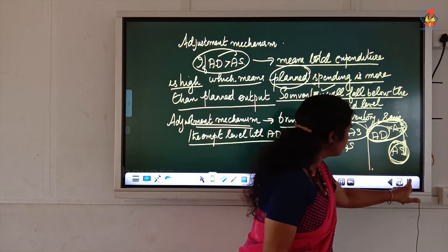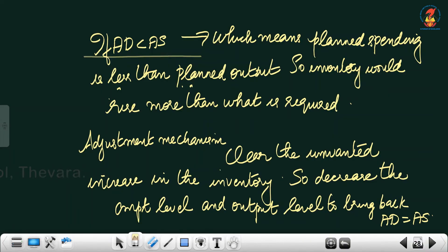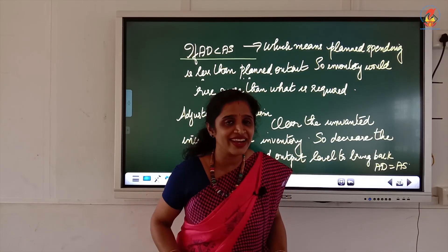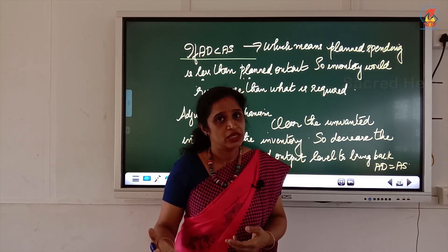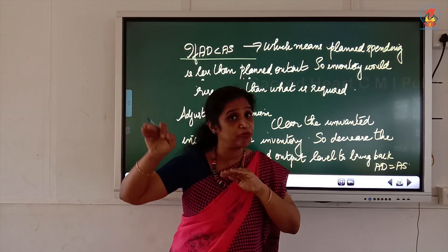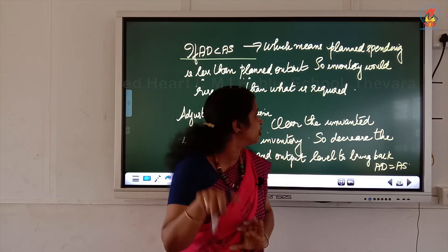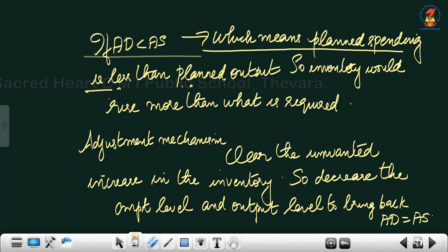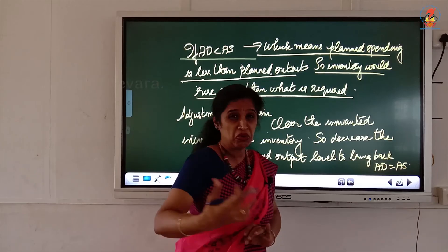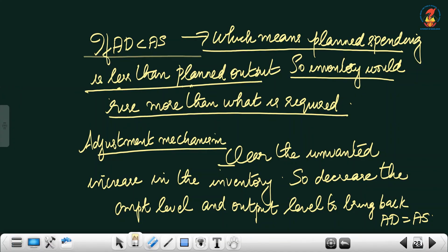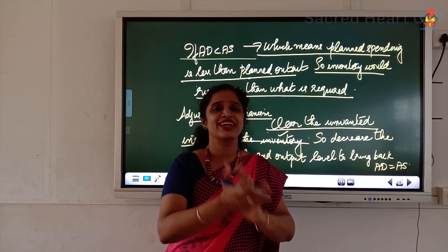Similarly, when AD is less than AS, planned spending is less than what is being supplied. Inventory would rise more than what is required. The adjustment mechanism here is to clear the unwanted increase in inventory — supply is very high but people are planning to buy very little, so stocks pile up.